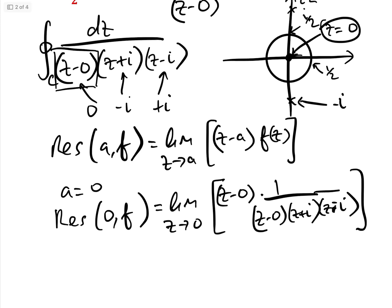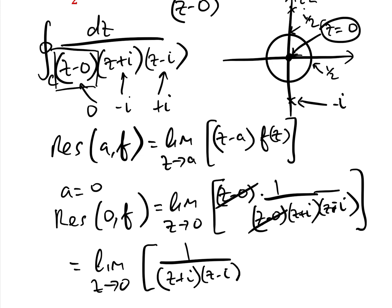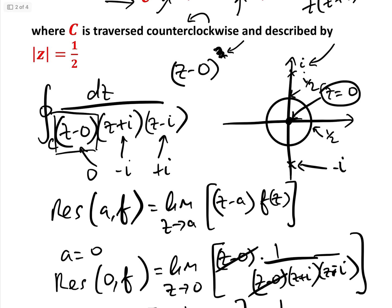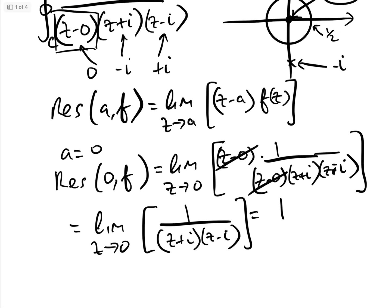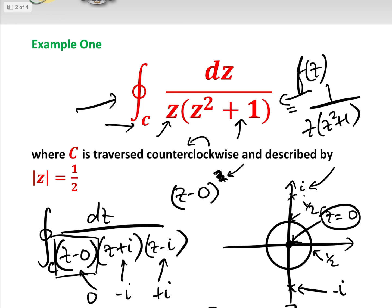The (z − 0) factors cancel, leaving the limit as z→0 of 1 / [(z + i)(z − i)], which clearly equals 1 / [(i)(−i)] = 1. So the residue at this pole is 1, and therefore by the residue theorem the integral equals 2πi times the sum of residues. With only one residue of value 1, the integral equals 2πi.